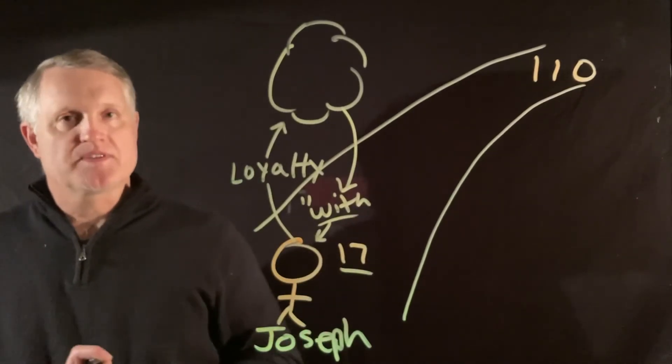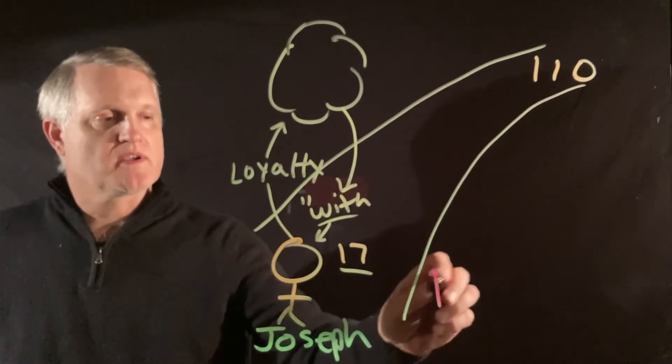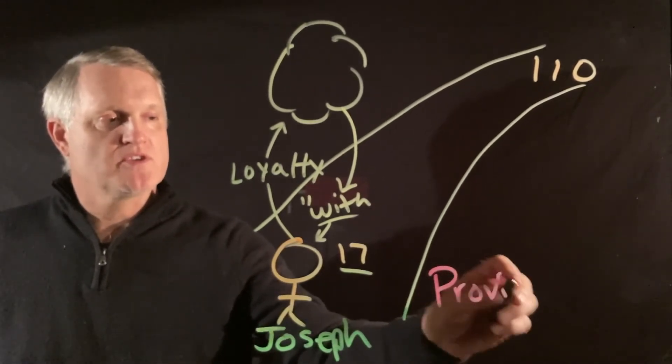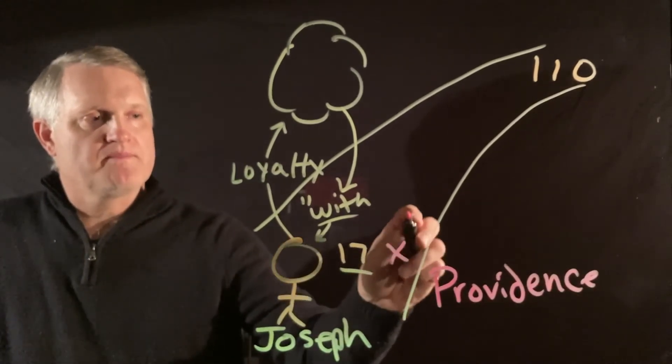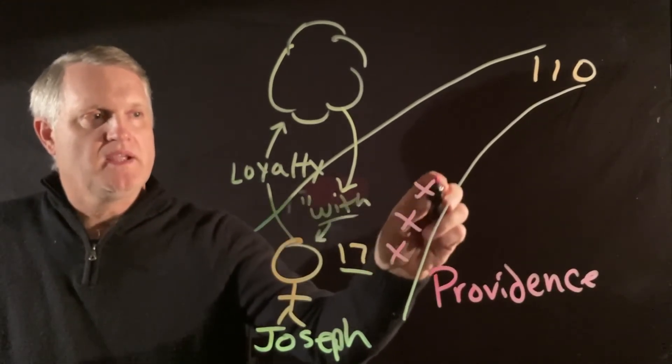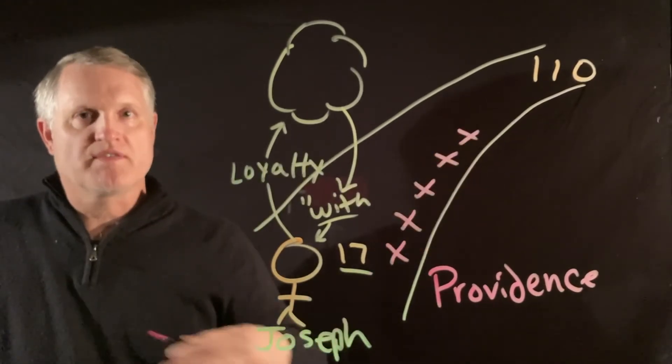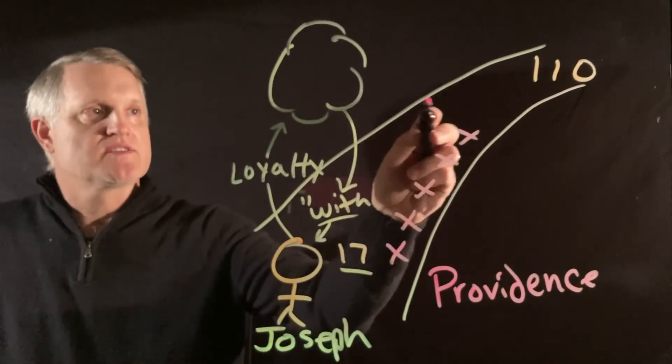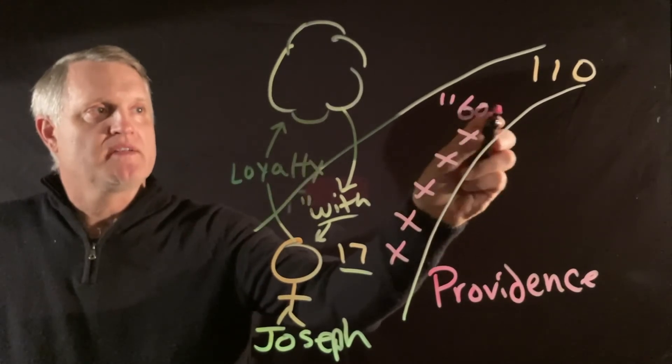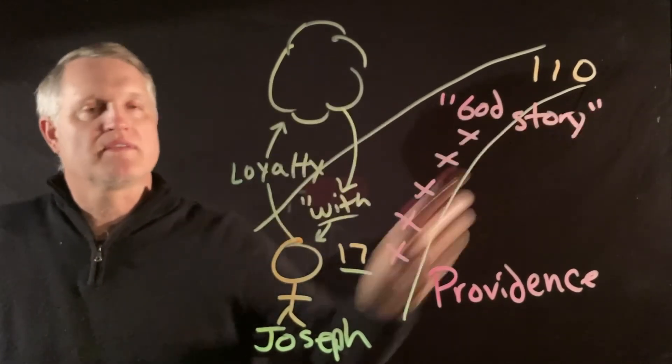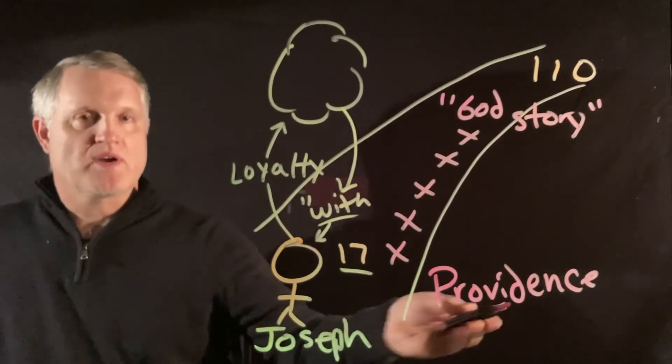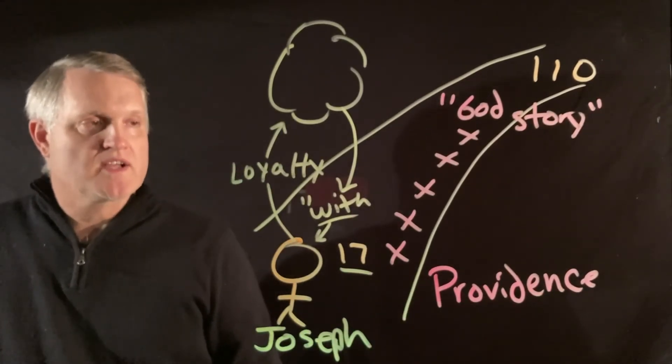The other thing that happens, and this will be all the way to the end of the book, and it's just good to bring it up now so you can be watching for it, is how the mean, petty, even sordid decisions of other people can still end up with God getting his story written in the life of a person. We call it providence in theological terms.